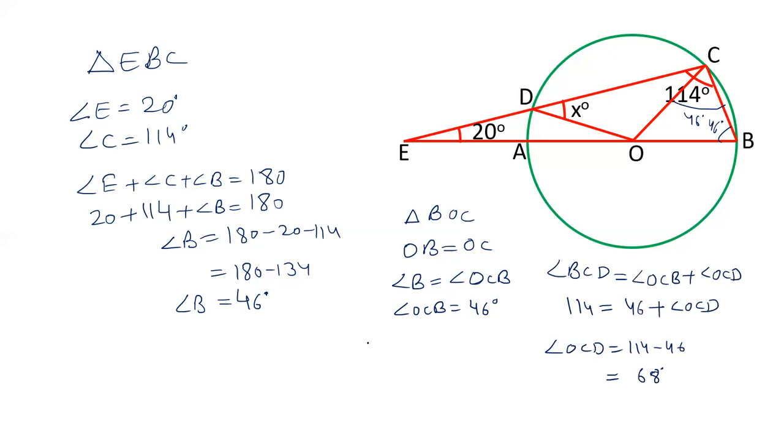Now let us take triangle OCD. In triangle OCD, OD and OC are equal. Therefore angle OCD equals angle ODC. OCD we calculated as 68. ODC is X. Therefore the value of X is 68 degrees.